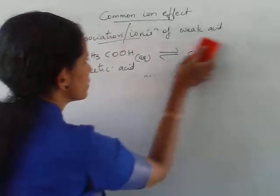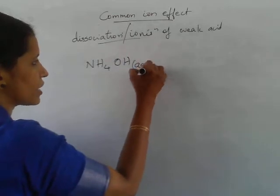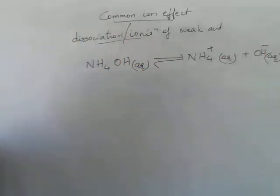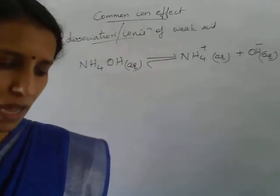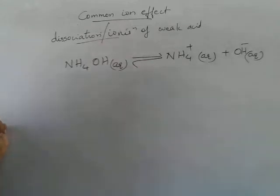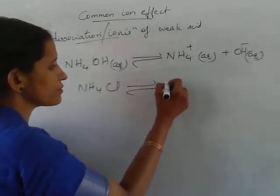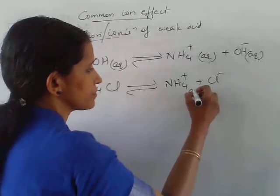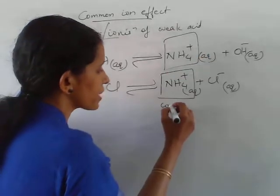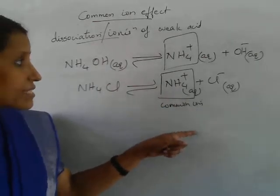Let us write another example. Consider the dissociation equilibrium of a base — ammonium hydroxide. Ammonium hydroxide in water dissociates to give ammonium ion (NH4 plus, aqueous) plus hydroxyl ion (OH minus, aqueous). Into this equilibrium, if we add some ammonium chloride — which is an electrolyte — it dissociates to give ammonium ion and Cl minus. This ammonium ion is also present in the equilibrium, so it is the common ion.